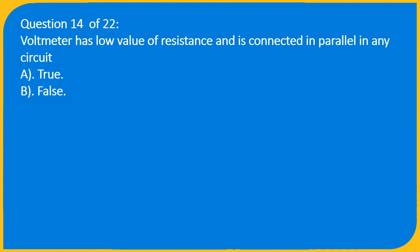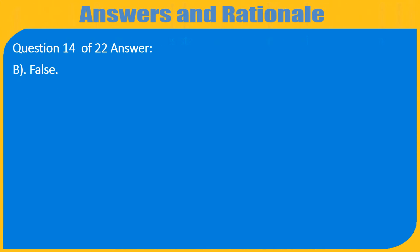Question 14 of 22: A voltmeter has a low value of resistance and is connected in parallel in any circuit. A. True, B. False. Answer: B. False.